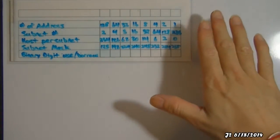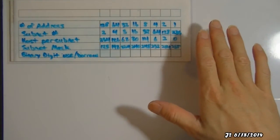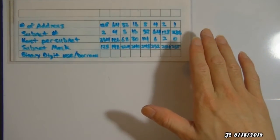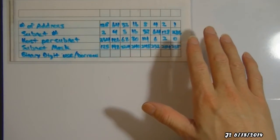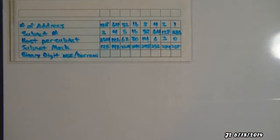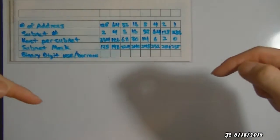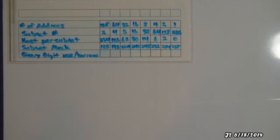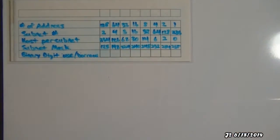So, this right here is the previous subnetting and IP chart which I used on my previous video to figure out the IPv4 address and the subnet mask. If you want to take a look at the previous video, I'll leave a link below for you to click on, and you can go back and look at how I set this chart up.